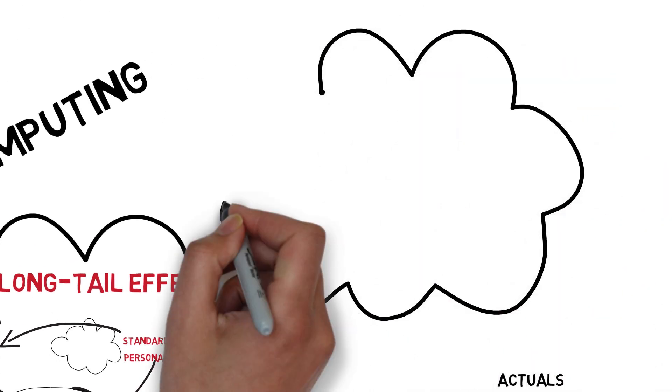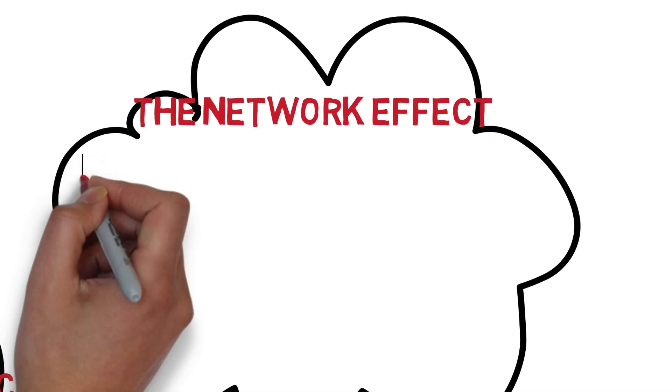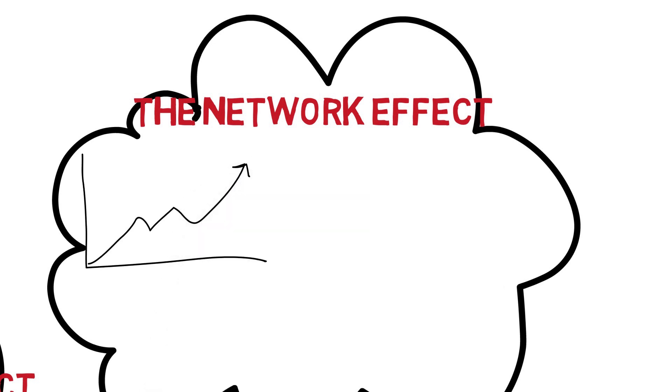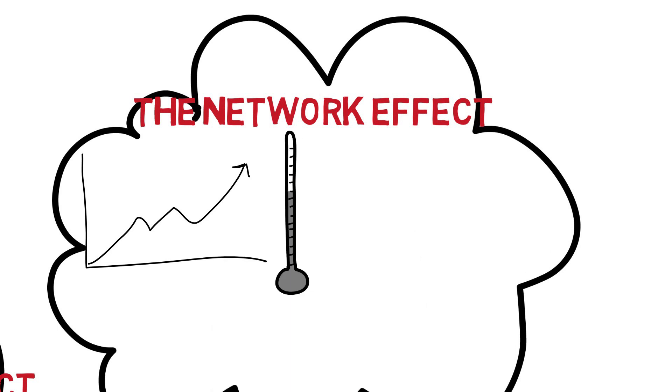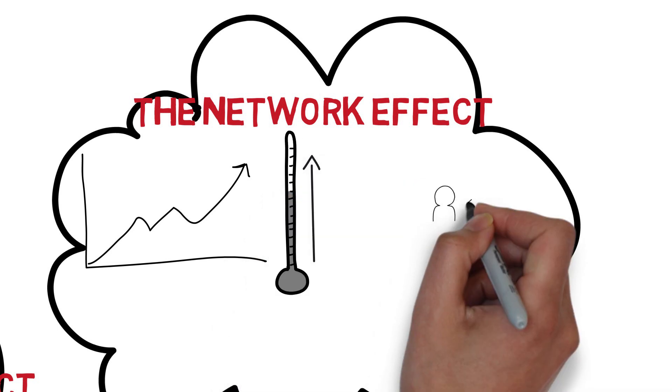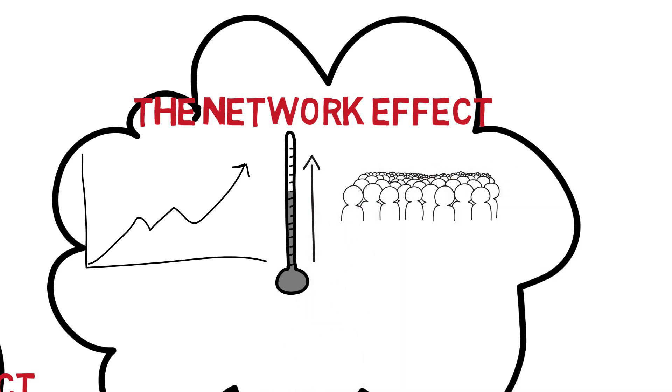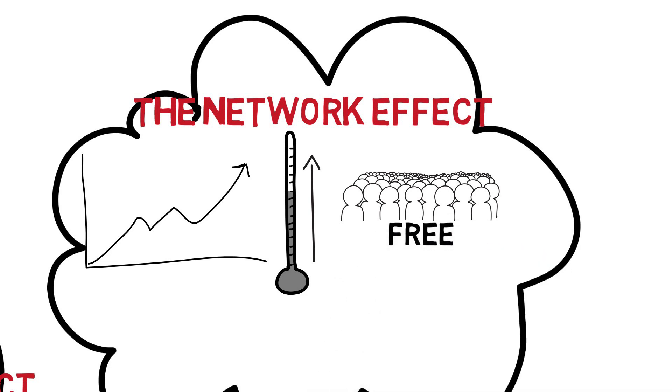Finally, the network effect. The simplified explanation is that the network effects occur when a company's products or services become more valuable as a result of increased usage. Many Silicon Valley unicorns are fast-growing enterprises due to the rapid growth in users of their new services, but few of them are able to retain long-term paid users because the costs are just too high.